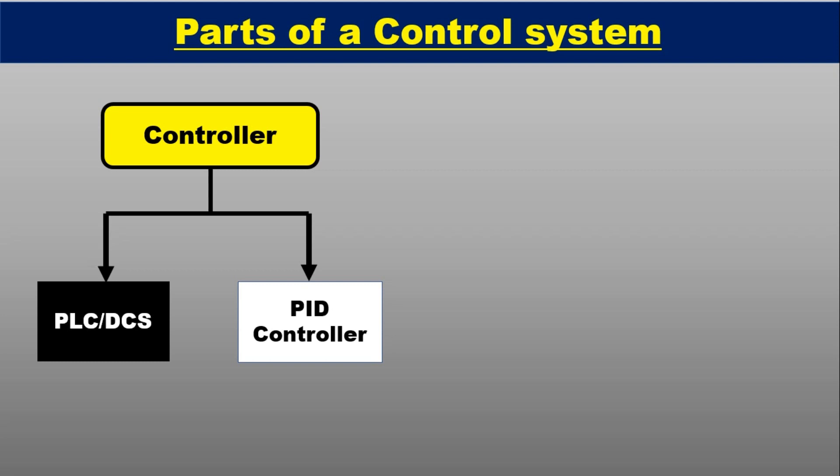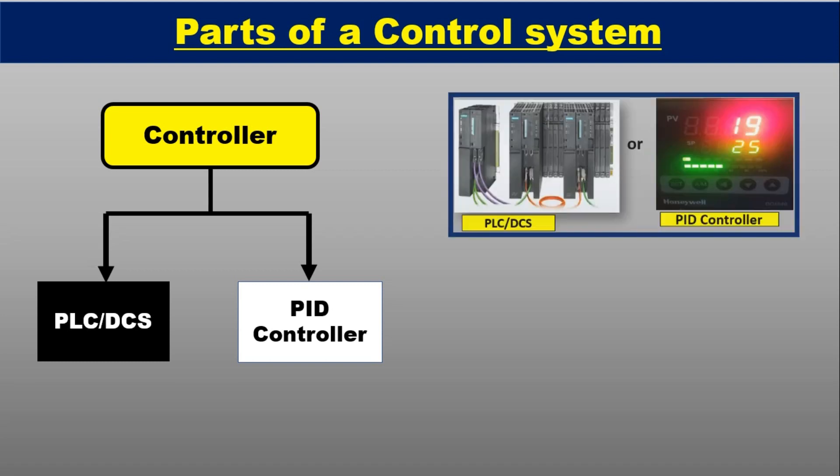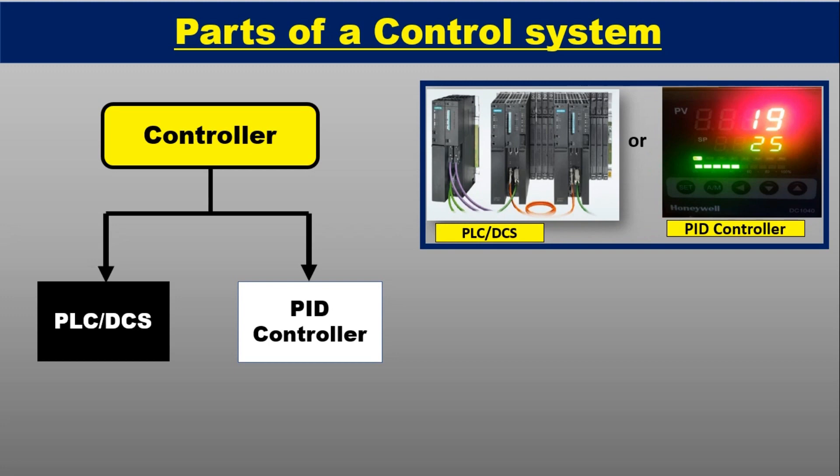To understand the pneumatic control valve operation, we must know the parts of our control system. The main part is controller. Mainly two controllers are used. The first one is PLC-DCS controller and the other one is PID controller. These controllers are used to control the process.